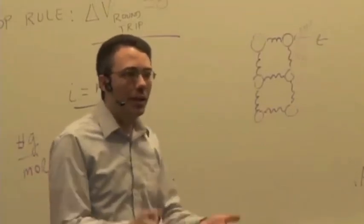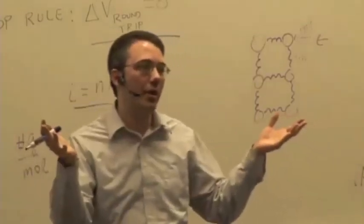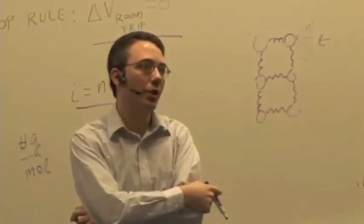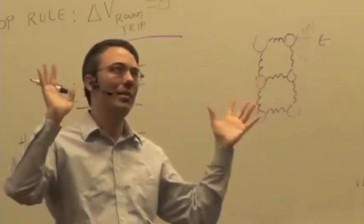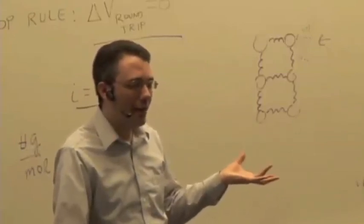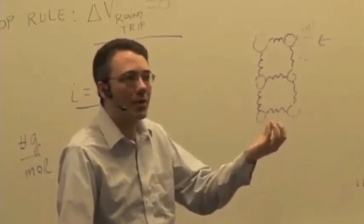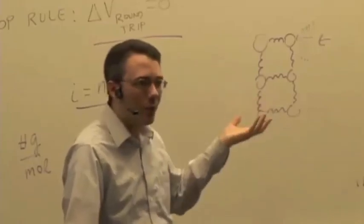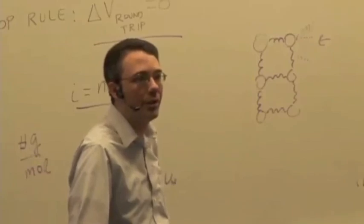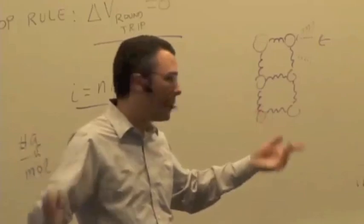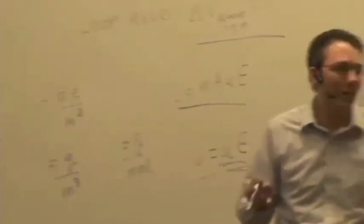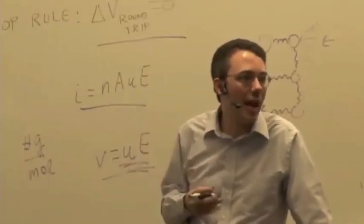Iron may have a different number of atoms per cubic meter than copper since it's denser. The number of atoms per cubic meter comes from quantum mechanical properties — the size of the atom — which we can reason out from the periodic table. N and U are purely material properties: N is per cubic meter so it's independent of how much material you have, and mobility is per-electron in some sense, so it's also purely a material property.